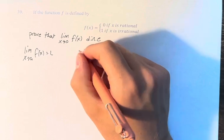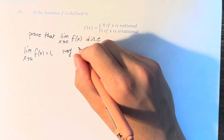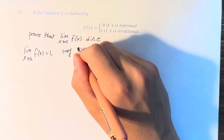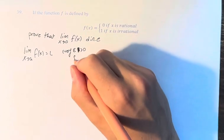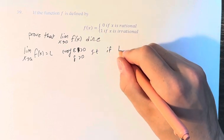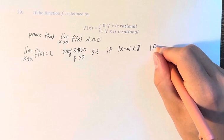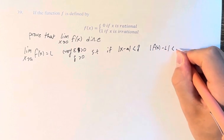So this is true if, for every epsilon greater than 0 that we could pick, there is a delta greater than 0, such that if the absolute value of x minus a is less than delta, then the absolute value of f of x minus l is less than epsilon.